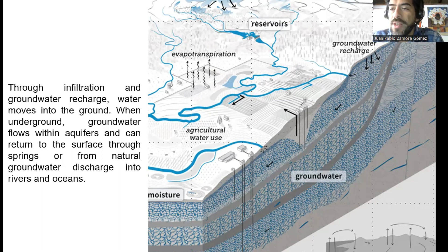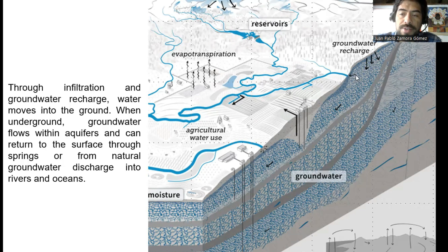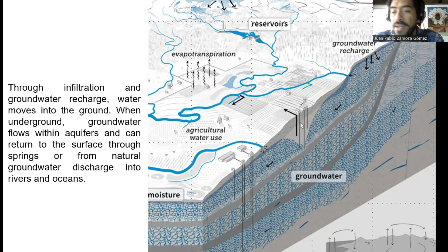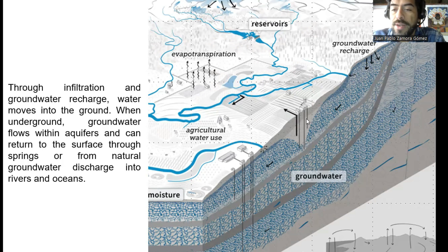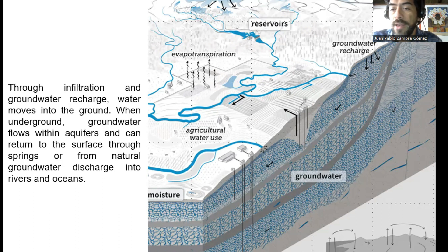We can see a representation of infiltration processes — groundwater recharge and how water circulates through the aquifer. It is important to consider water abstractions. For example, here we can see wells or boreholes pumping water for irrigation and agricultural purposes.